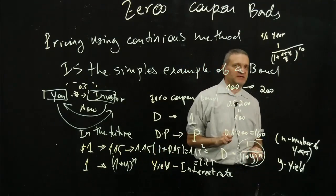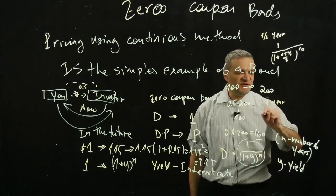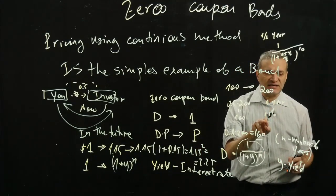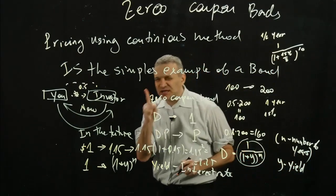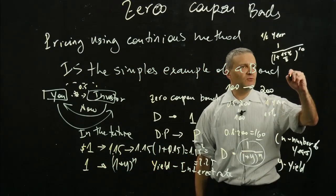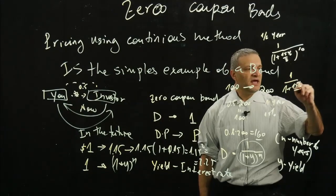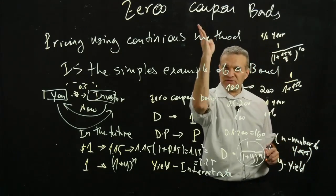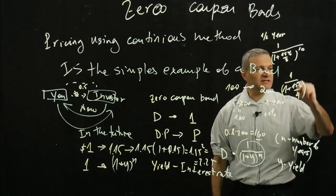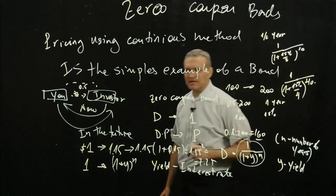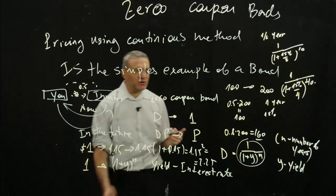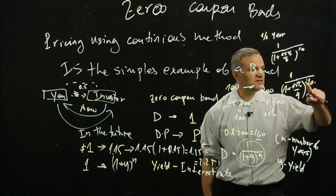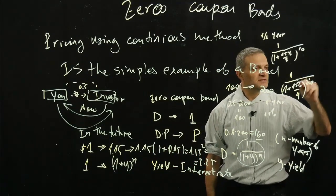What would happen if instead of semi-annual you had three months — quarterly? It's going to be 1 divided by (1 + 15%/4). And you multiply by 20. Why? Because in five years, you have 20 quarters — 5 years times 4 quarters per year.